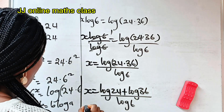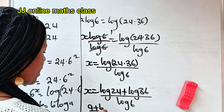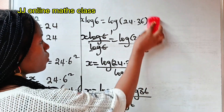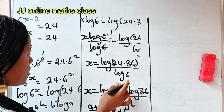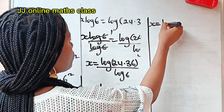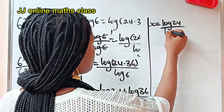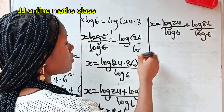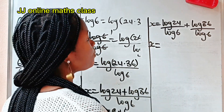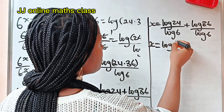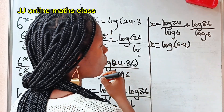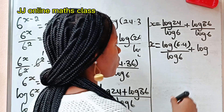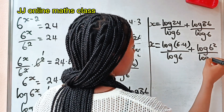Now, recall that when you have a plus b divided by c, this is equal to a over c plus b over c. So that means we can write this as x is equal to log 24 divided by log 6, plus log 36 divided by log 6. Log 24 can be expressed as log of 6 multiplied by 4, and log 36 is the same as log of 6 squared.